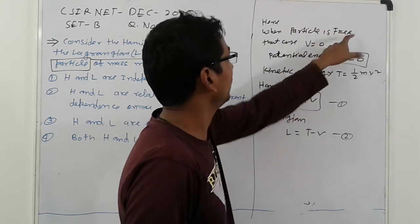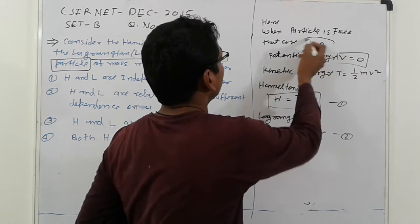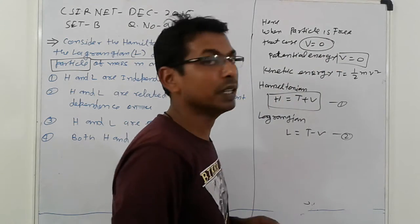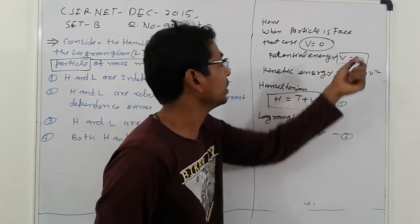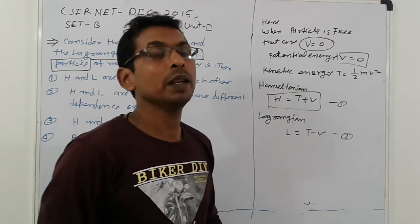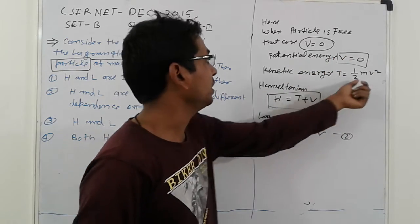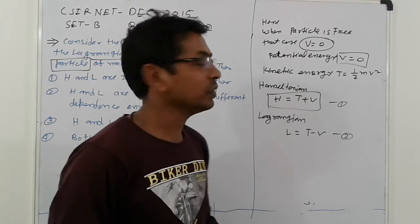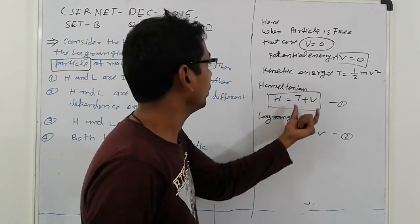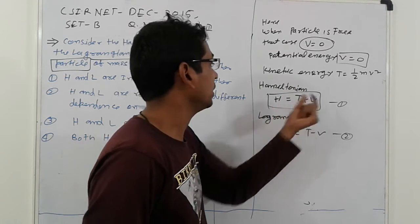When the particle is free, that is the case—the particle is free. Potential energy V means the potential energy is zero. Next, kinetic energy everyone knows: ½mv². And what is the Hamiltonian relation between kinetic energy and potential energy?